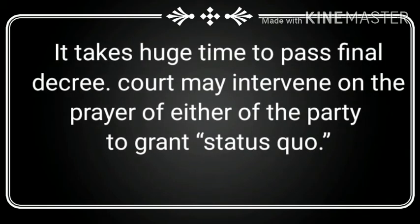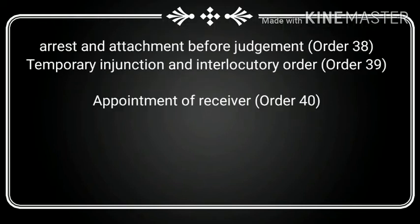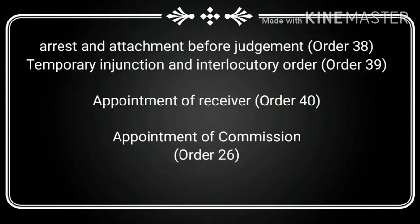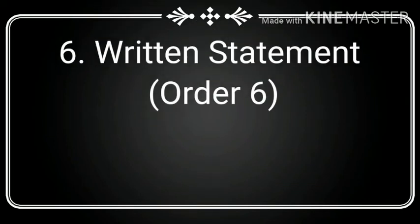Number five: interlocutory proceedings. It takes a huge amount of time to pass a final decree, so the court may intervene on the prayer of either of the parties. There are different kinds of interlocutory proceedings, such as arrest and attachment before judgment, temporary injunction, appointment of a receiver, and appointment of a commission.